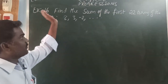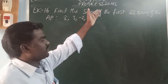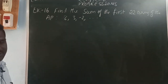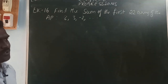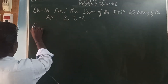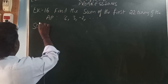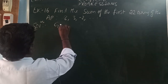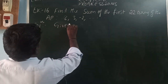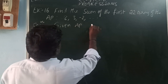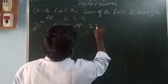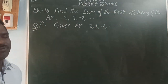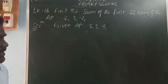Example 16: Find the sum of the first 22 terms of the AP: 8, 3, -2, and so on. Given AP: 8, 3, -2, ... Sum of the first 22 terms. First term a = 8, common difference d = a2 - a1 = 3 - 8 = -5. Number of terms n = 22.